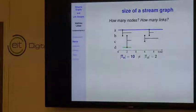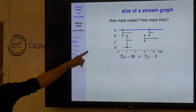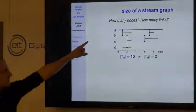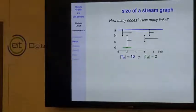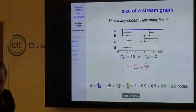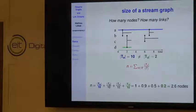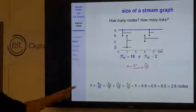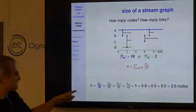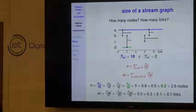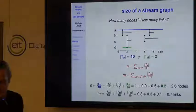Now the most basic property is the size. When you have a stream graph, you might say there are four nodes—but node A is present for the full 10 units while node D is present for only two. So we introduce a fractional number of nodes: each node contributes proportionally to its time presence, giving in this example a fractional node count of 2.6. We do the same with the number of links: a link present all the time counts as one, a link present half the time counts as one half.